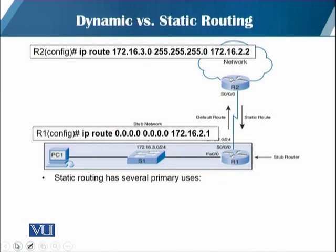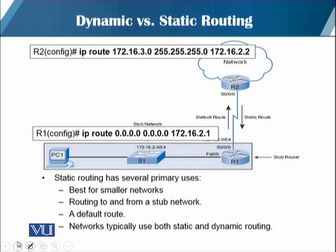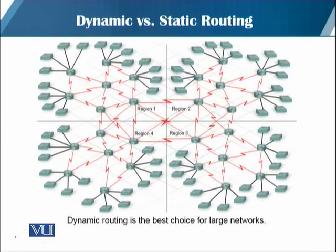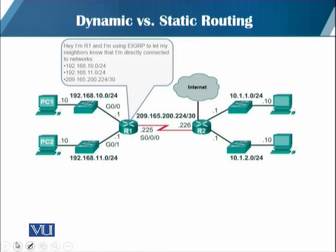Static routing کے بھی کچھ advantages ہیں۔ اگر network بہت small ہے تو static route بہتر ہے۔ اسی طرح اگر صرف stub network کے through route کرنا ہے یا default route دینی ہے — جو router سے beyond انٹرنیٹ کی طرف ہو — تو static route use کریں۔ آج کے networks typically دونوں static اور dynamic routing use کرتے ہیں، اور large networks کے لیے dynamic routing best choice ہے۔